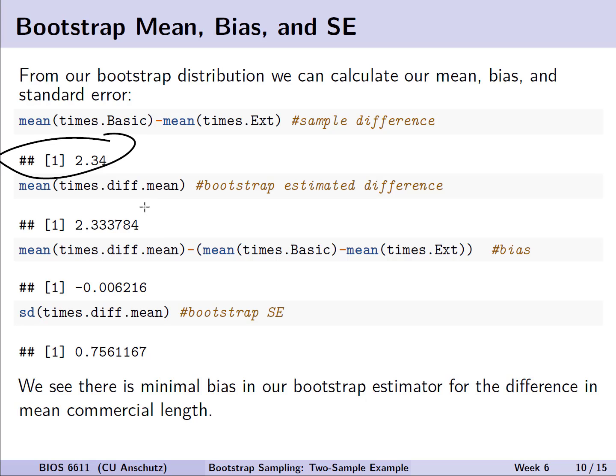We can compare this to the actual observed difference in means, which is pretty close, resulting in minimal bias. And we have our estimated standard error from the difference in means from our bootstrap distribution of 0.756, which we can then use to estimate the potential accuracy of things like our bootstrap percentile confidence interval.